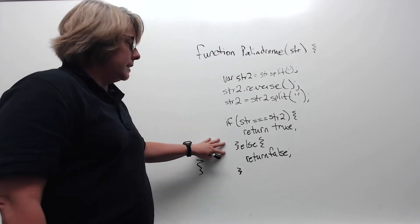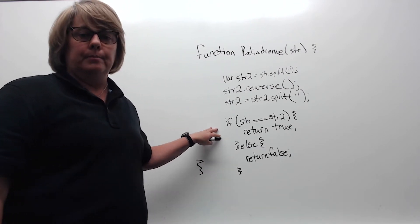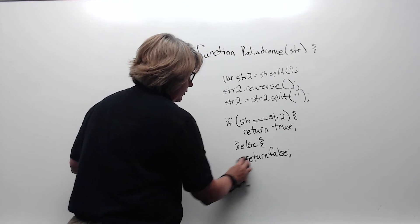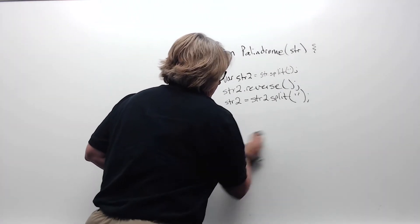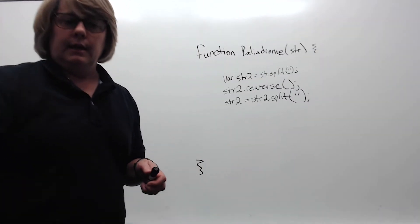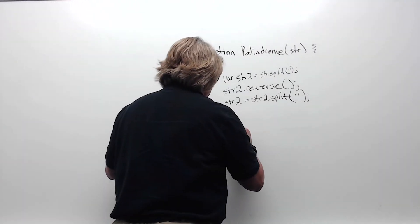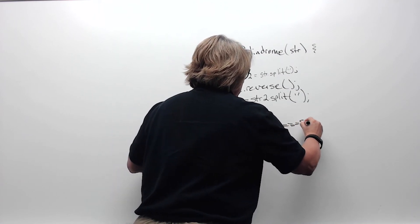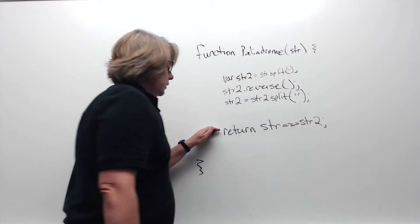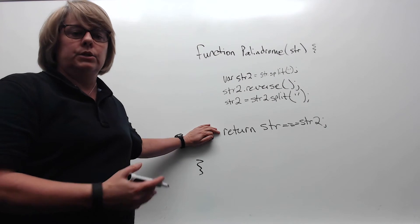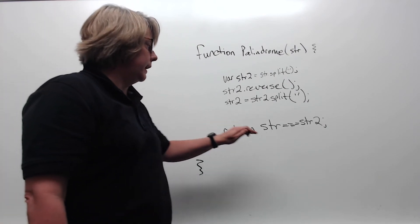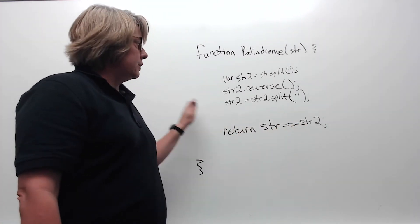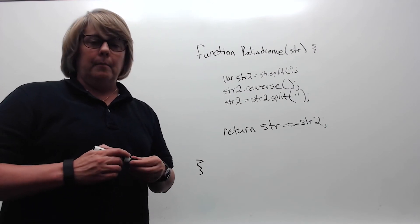Now there are things I can do to make this a little better. I can take my if statement and refactor it so that it just returns whether or not string is equal to string2. This one line is equivalent to the if statement before — it's going to be either true or false — and that's what I'm returning out of my function.